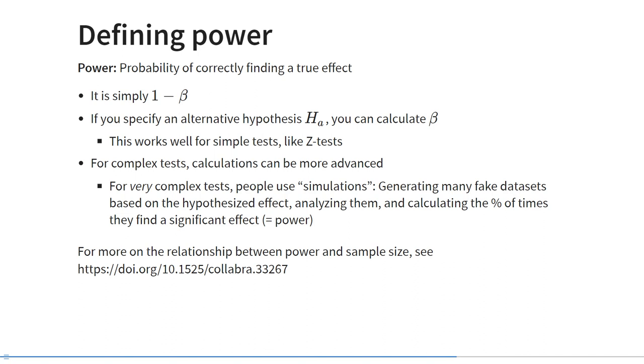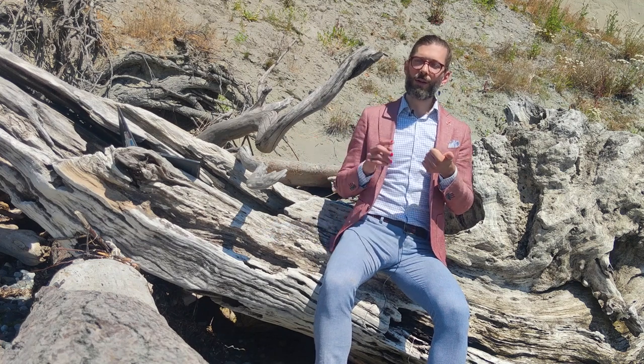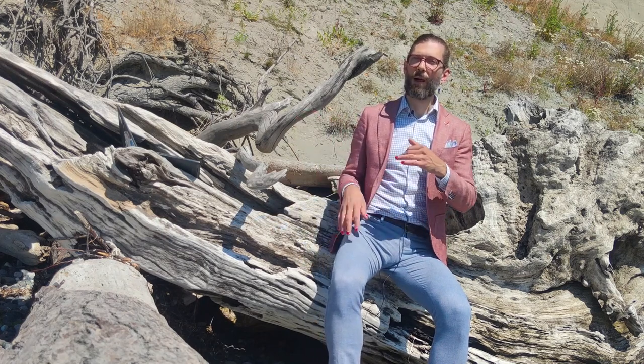For more information about the relationship between power and sample size, you can follow the link on the screen. Here is an intuitive perspective on power. It is like looking for an object in a dark basement. The probability of finding that object increases if the object is bigger — applied to power, this means if the effect size is bigger. The probability also increases if you search for longer — applied to power, this means if your sample is larger. A third factor is how cluttered your basement is — applied to power, this means how little noise there is in your data. If your standard deviation is smaller, you have greater power.